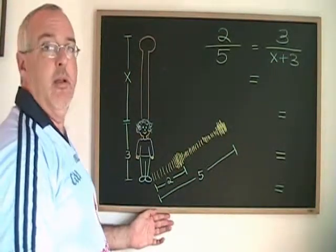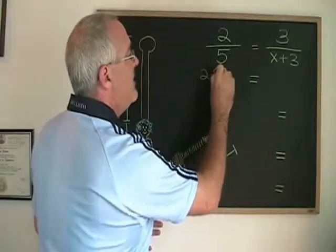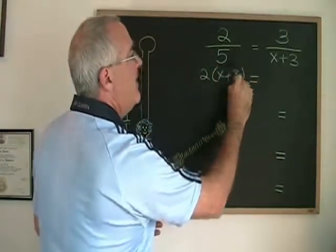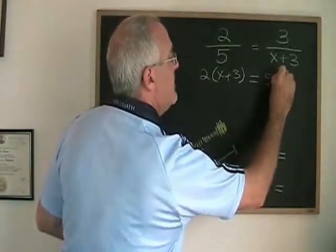Cross multiplying, top times bottom gives me two times X plus three equals bottom one times top, which is five times three.